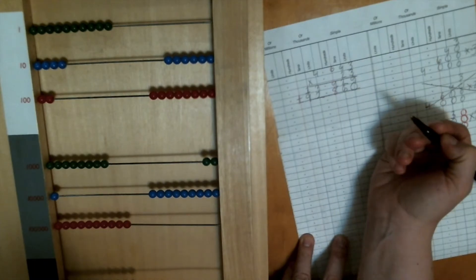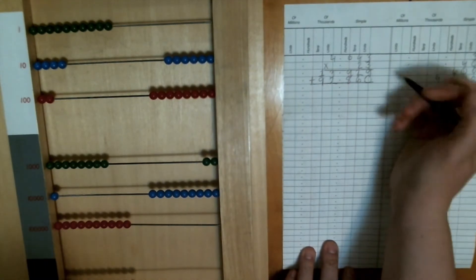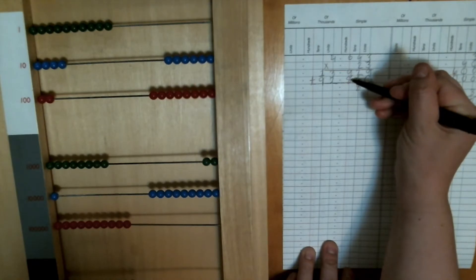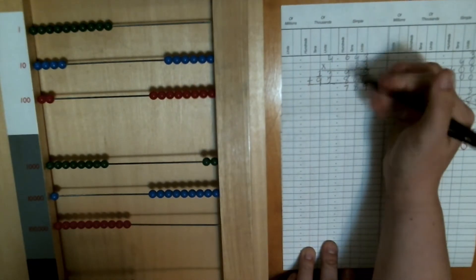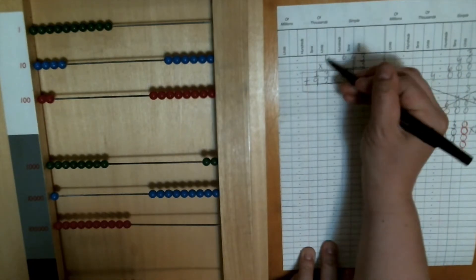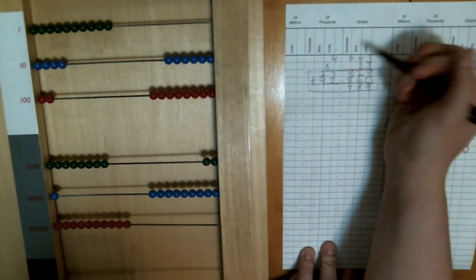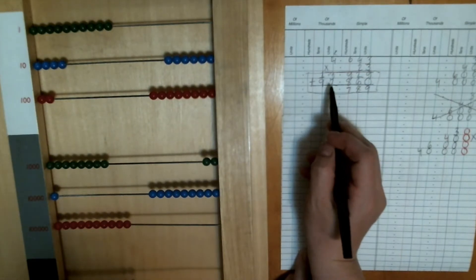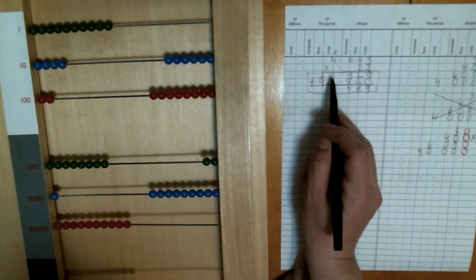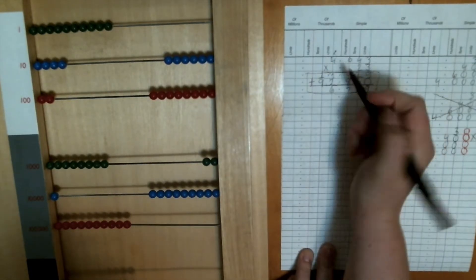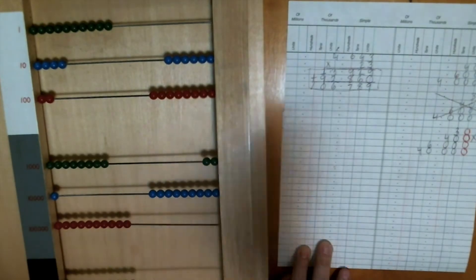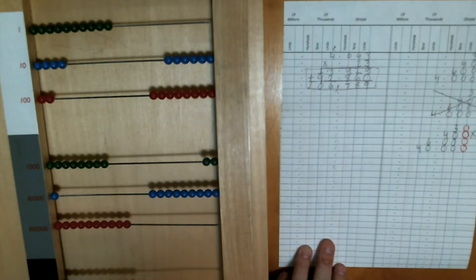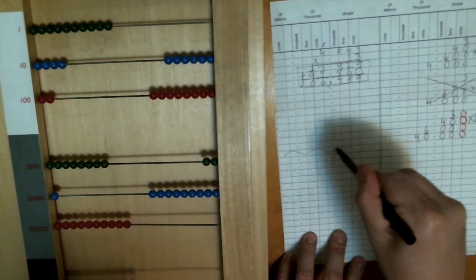We have these two partial products, and since they are part of the answer we're going to add them together to get the full answer. Nine plus zero is nine, two plus six is eight, nine plus eight is seventeen — put the seven here, carry the one. One plus three is four plus two is six, then one plus nine is ten. So our answer is 106,789. Let's do another one — I'll reset my frame.